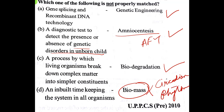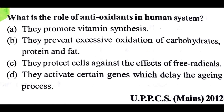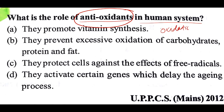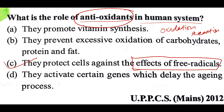What is the role of antioxidants in the human body? As the name suggests, antioxidants help in reducing oxidation reactions in our body. These oxidation reactions are caused by free radicals, so antioxidants basically protect our body from the effects of free radicals. The answer is C.